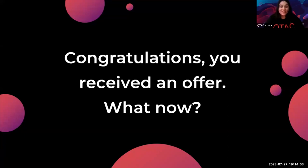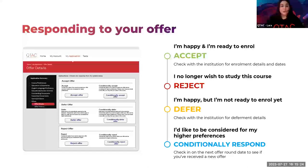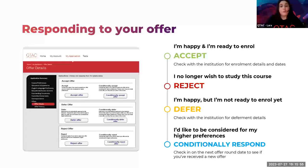Congratulations, you've received an offer — what do you do now? If you're happy with the course and want to enrol, you outright accept. If you no longer wish to study that course, you outright reject. If you're happy but not quite ready to enrol — maybe you want a year off — you outright defer. It's really important to remember that when you accept, reject, or defer, it's an outright response, meaning your application won't be considered for anything else. If you want to be considered for something else, you have to conditionally respond. Also, ignoring your offer and letting it lapse is counted as a rejection.